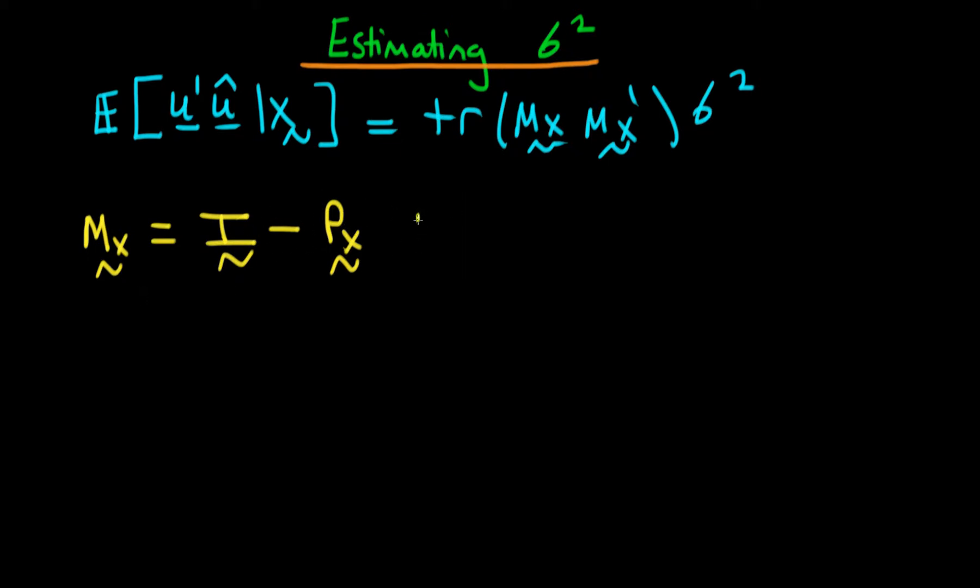So what in this circumstance is mx primed, or the transpose of mx? Well, it's just equal to the transpose of the identity matrix, which is just the identity matrix, minus the transpose of px. But what is the transpose of px? px we know is equal to x times x primed x to the power minus 1 times x primed.